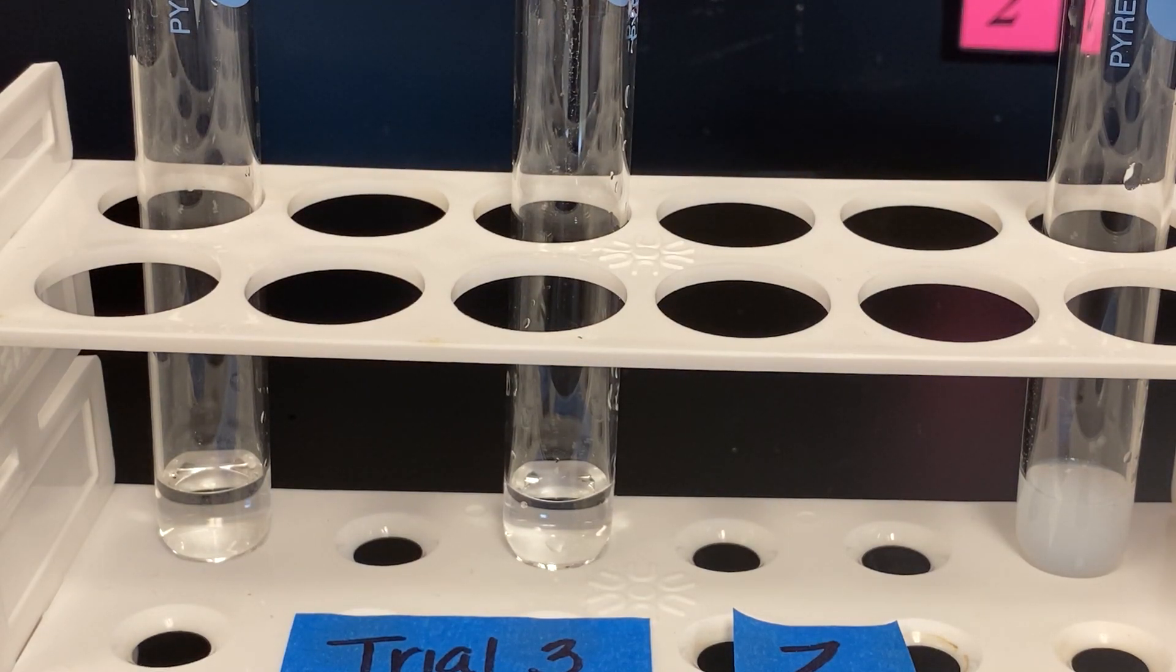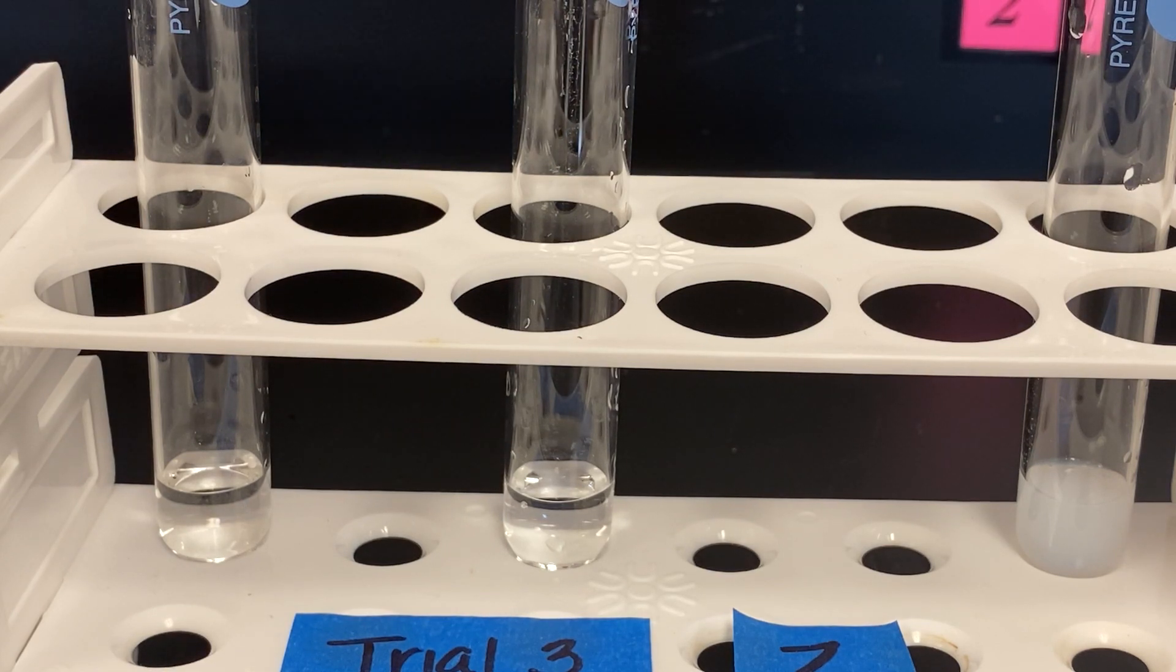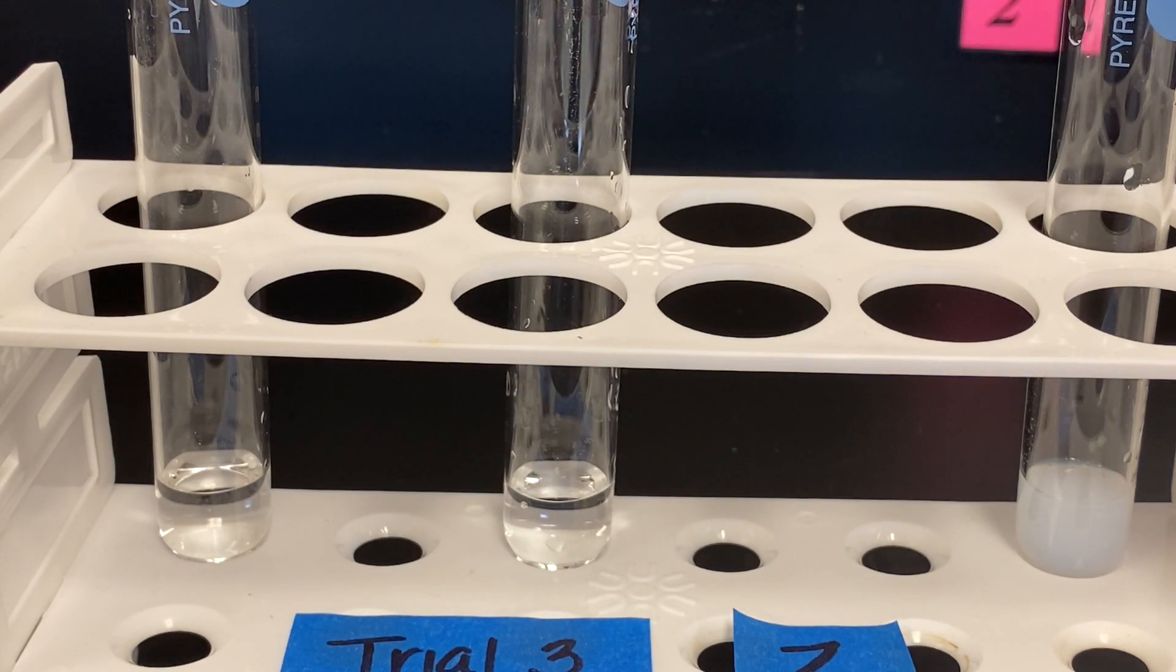Ensure that you've documented what you observed during each trial. Ensure that you annotate which test tube had which solution mixture. Using the scientific method for Step 3, you will complete a brief lab report using complete sentences. Be as specific in your observations as possible.